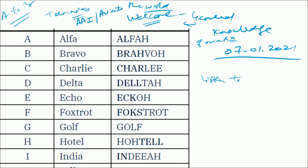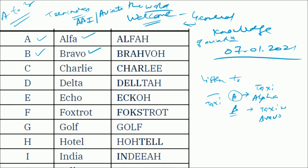Starting with alphabet A — A is generally pronounced as 'Alpha,' whereas B is known as 'Bravo.' So let's say if you want to say there are two taxiways, taxiway A and taxiway B, and you want to communicate with the pilot or with the ATC — you would say 'taxiway Alpha.' Likewise for taxiway B, we call it 'taxiway Bravo.'